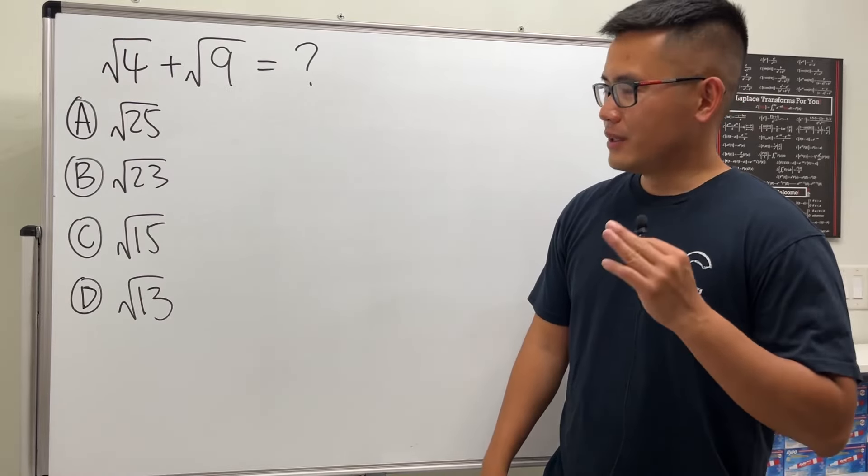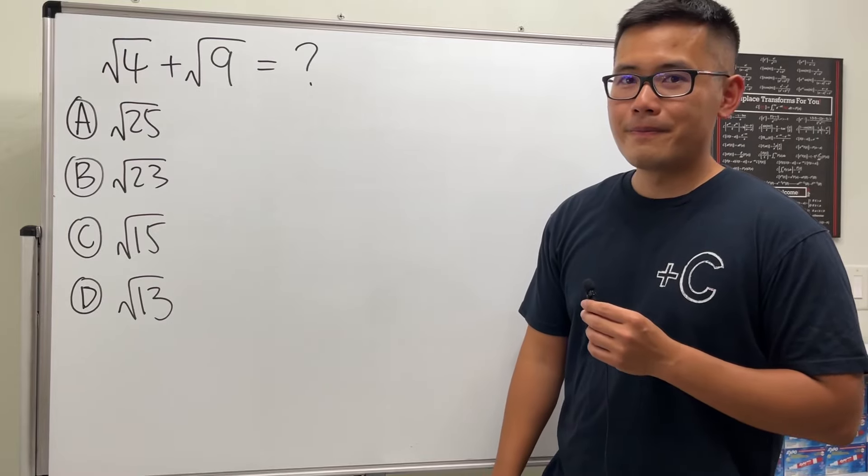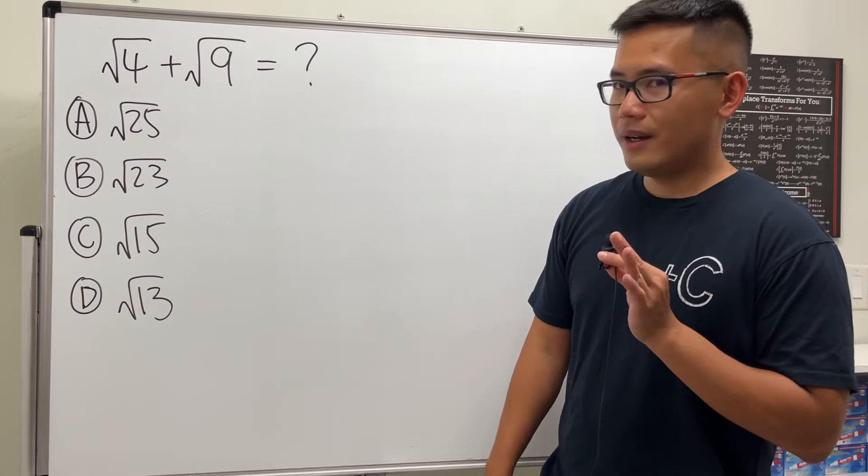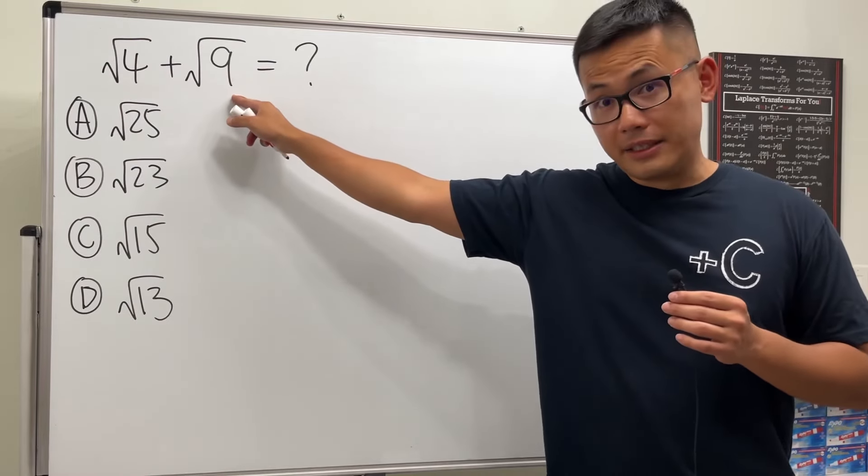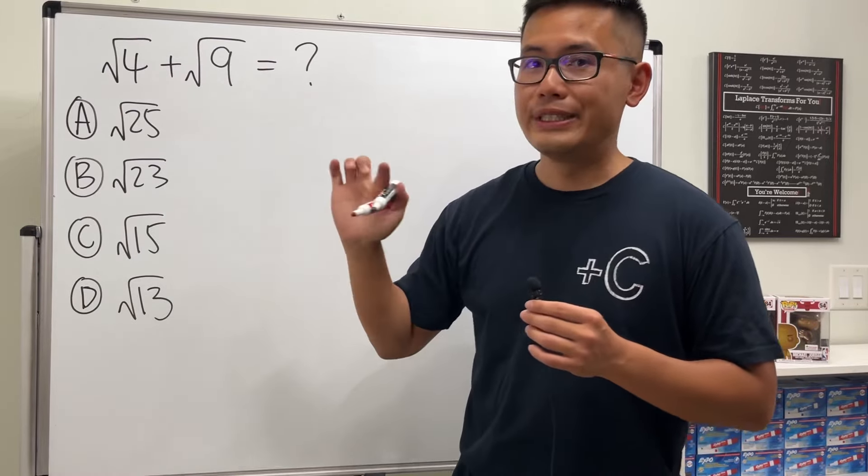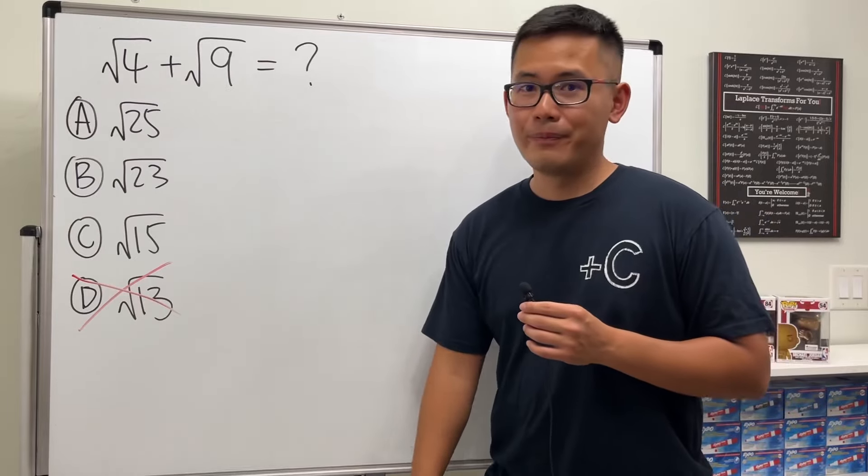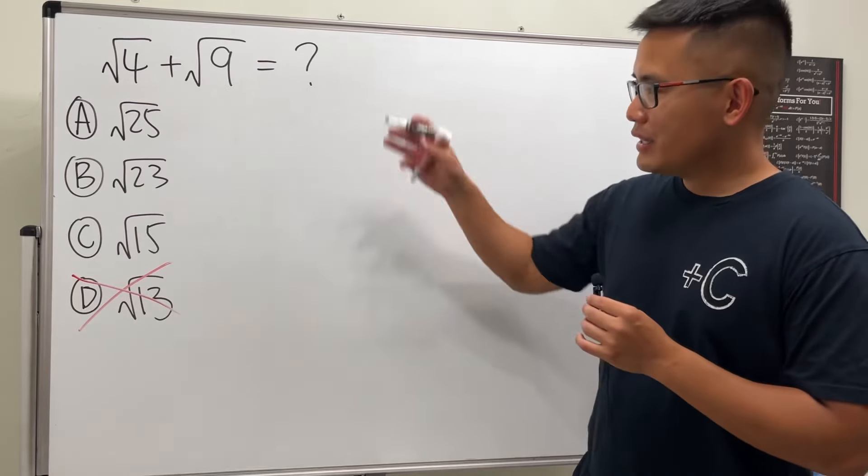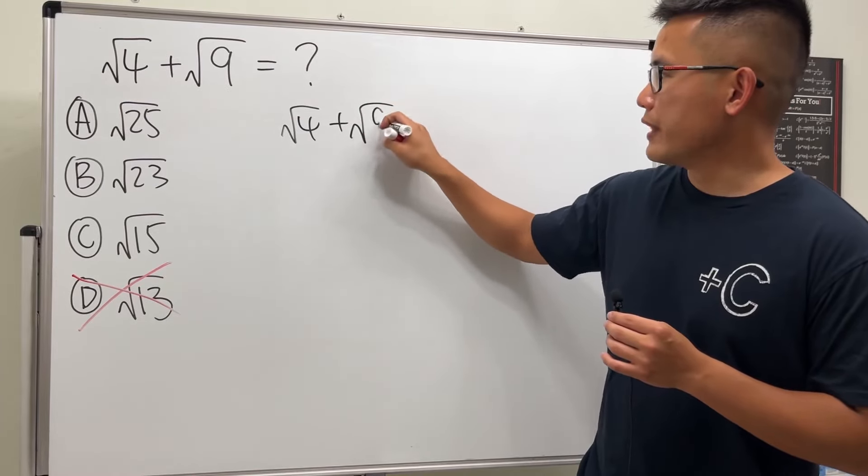Go ahead and pause the video and try this first. Done? Okay, 4 plus 9 is 13, so the answer is 13 with the square root, right? No, in fact the answer is not equal to D. Check this out: when we have square root of 4 plus square root of 9...